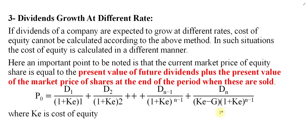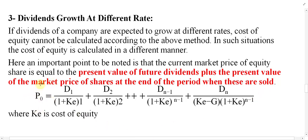An important point to note is that the current market price of the equity share equals the present value of future dividends plus the present value of the market price of the share at the end of the period when the share is sold. This method is based on that assumption: the current market price equals the present value of all dividends plus the present value of the terminal selling price.